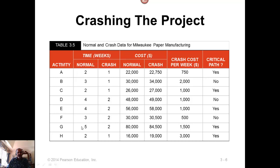For example, activity G under normal conditions takes five weeks, but it can be done in two weeks — so there is three weeks worth of crashing possible for G. The next two columns are normal cost and crash cost. Under normal conditions, G costs $80,000 and takes five weeks, but for an additional $4,500 you can finish it in two weeks.